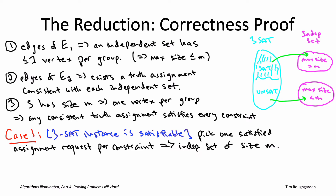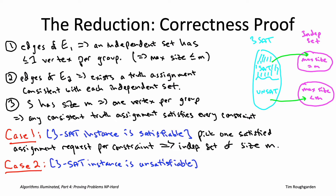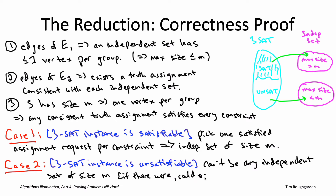Case two: suppose the 3SAT instance is unsatisfiable. Then the constructed graph cannot have an independent set of size m. If it did, that independent set would have one vertex per group, from which we could extract a satisfying truth assignment — but none exists by assumption. Therefore every independent set has at most m minus one vertices. When the reduction invokes the subroutine and gets back an independent set smaller than m, it correctly reports unsatisfiability, completing the correctness proof.